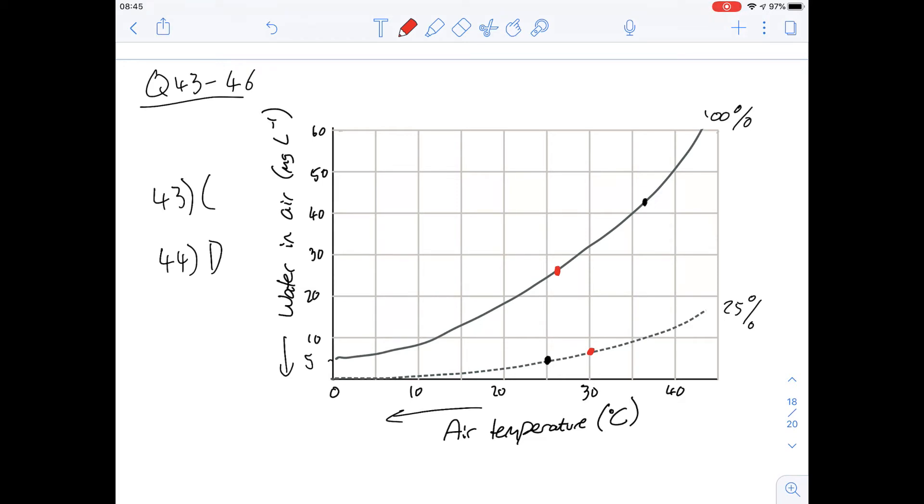Which of the following is closest to the net loss of water from the kangaroo rat for every liter of exhaled air? Again we're just looking at the difference in the height between these two dots and to me that looks like around 20 milligrams, closer certainly to 20 than it is to anything else. So the answer for this one which is question 45 is going to be A.